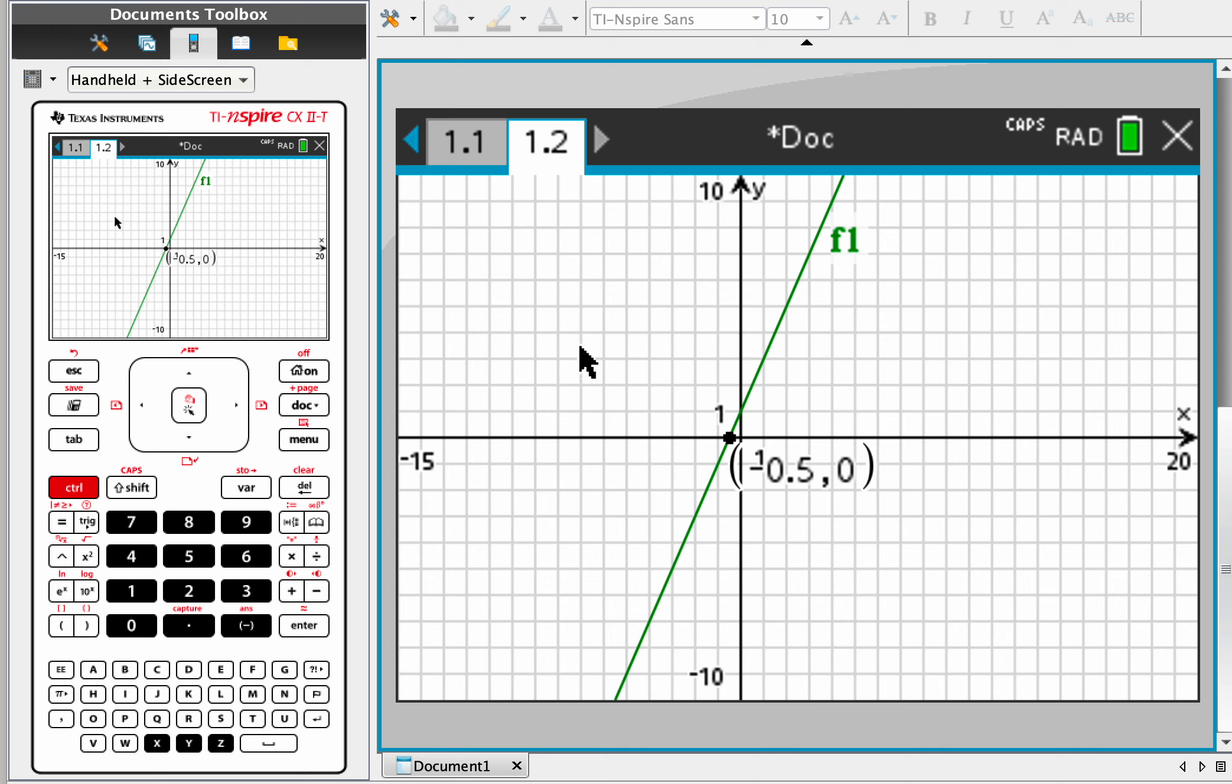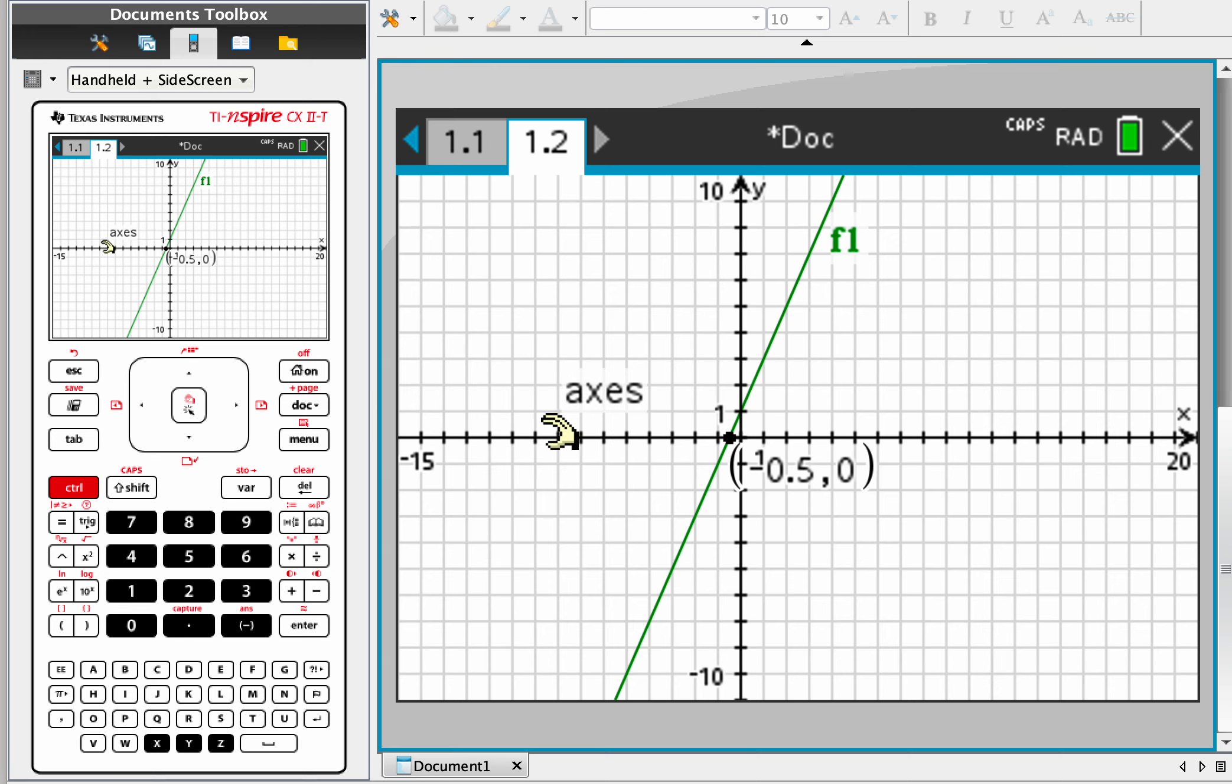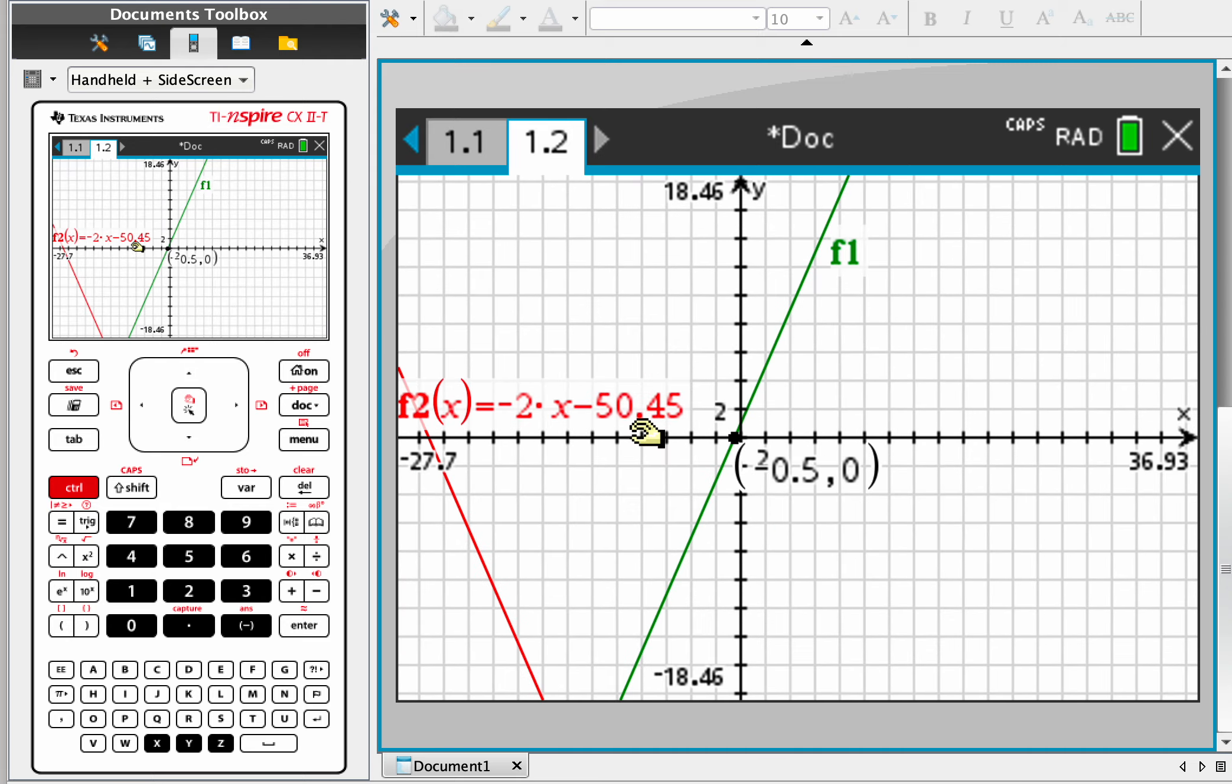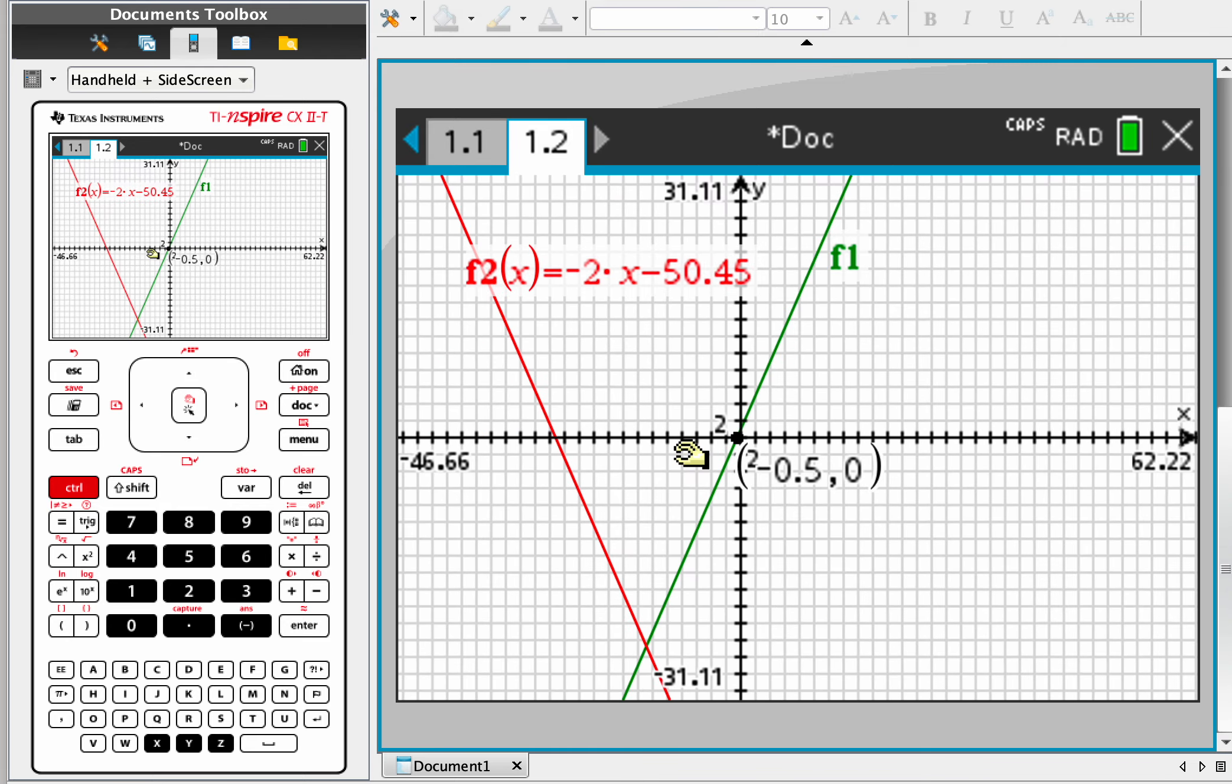So another thing you can do is you can speed this up by simply just holding on. You see this little grab button here? Just grab onto the axes and then just move it. And you can zoom in or zoom out, and that might be a quicker way to see what's happening here.